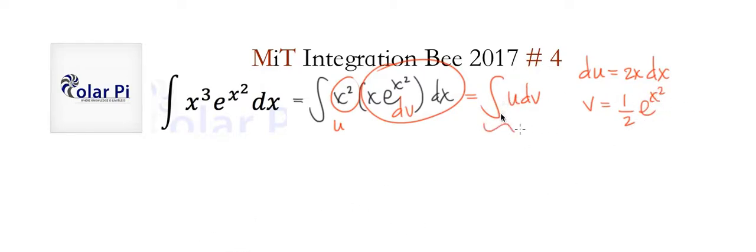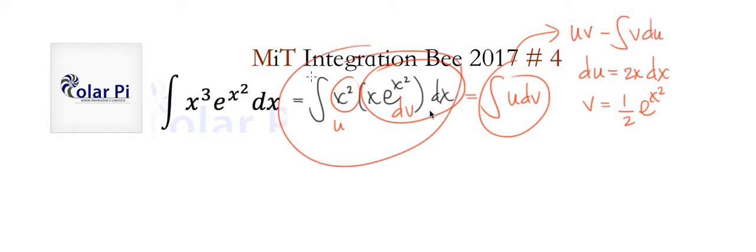We know that the integral of udv by the integration by parts formula is equal to uv minus the integral of vdu, and that's what we have left to execute.